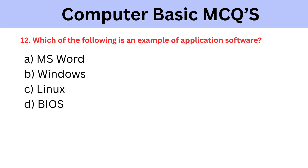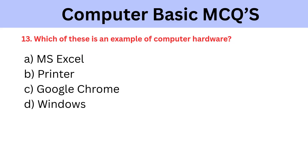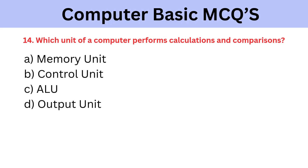Which of the following is an example of application software? A) MS Word, B) Windows, C) Linux, D) BIOS. The correct answer is MS Word. Which of these is an example of computer hardware? A) MS Excel, B) Printer, C) Google Chrome, D) Windows. The correct answer is Printer.